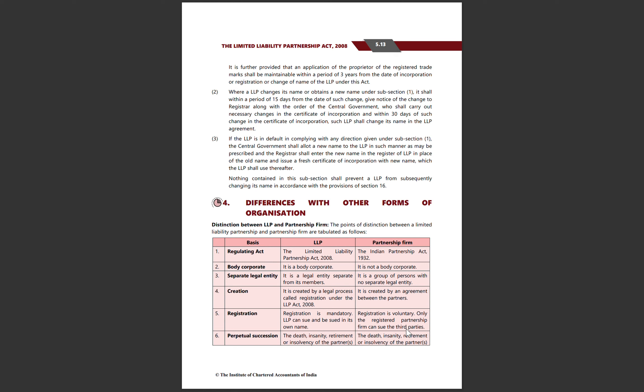The Central Government and Registrar shall carry out the necessary changes in the certificate of incorporation. Within 30 days you will receive the certificate with the changed name as approved. If the LLP defaults in complying with any direction given under subsection 1, the Central Government shall allot a new name to the LLP and the Registrar shall enter the new name in the register of LLPs in place of the old name and issue a fresh certificate of incorporation with the new name, which the LLP shall use thereafter.